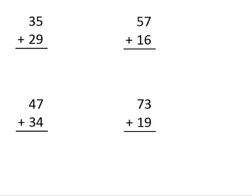Here we have four problems of addition. We have 35 plus 29, 57 plus 16, 47 plus 34, and 73 plus 19. We'll solve each of these in turn.